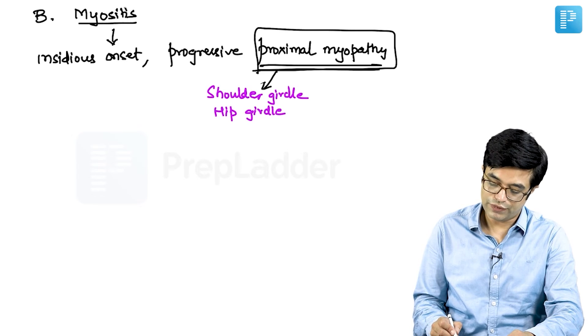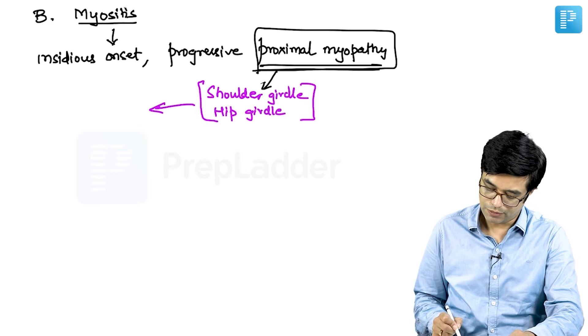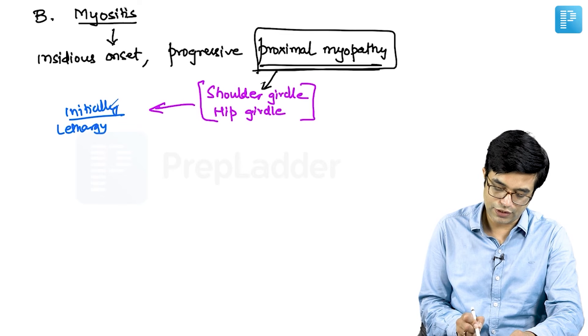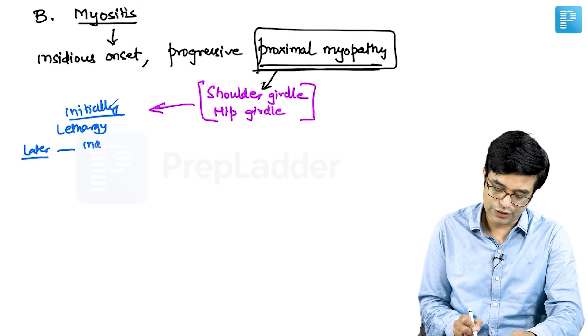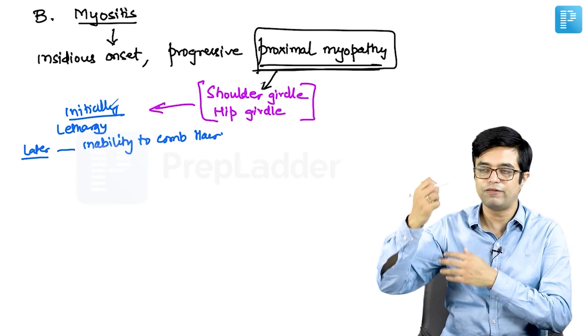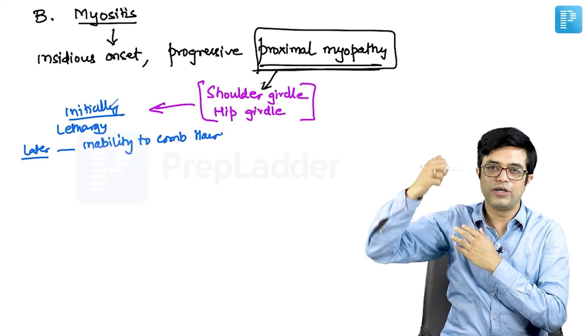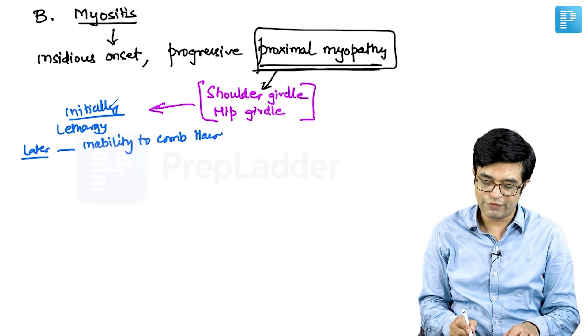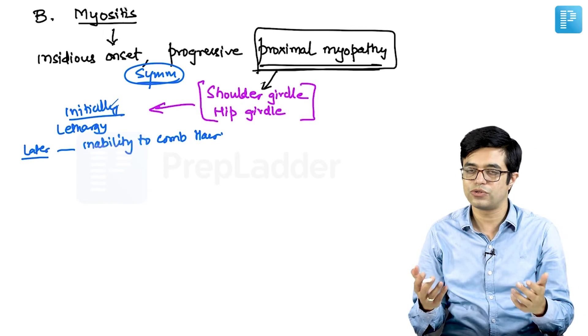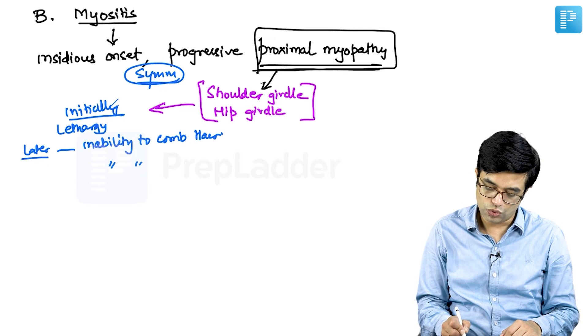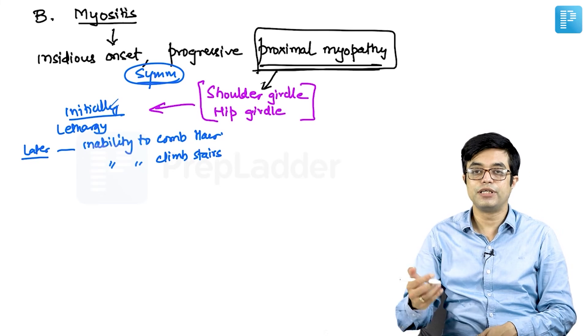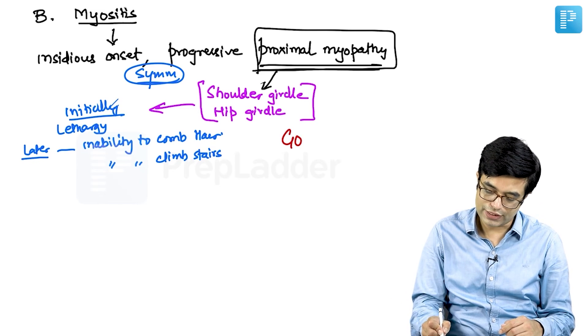Because of the involvement of these shoulder and hip girdle, it is found that these children have problems like initially it starts with slight lethargy. Later on, it progresses to inability to comb hair. The child will be unable to lift his arm and do combing on the affected side. It is usually symmetrical in nature, so it can happen bilaterally. There is inability to comb hair, there is inability to climb the stairs and inability to stand up from sitting position. They will also have a Gower sign which is positive.